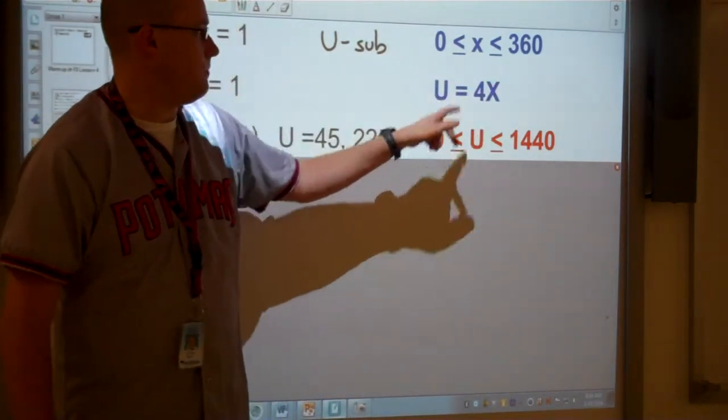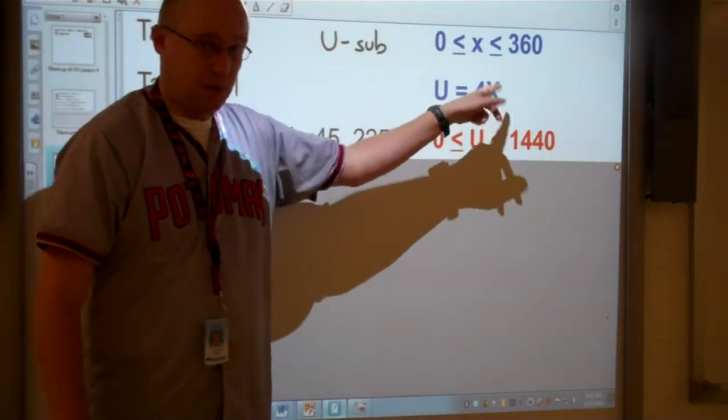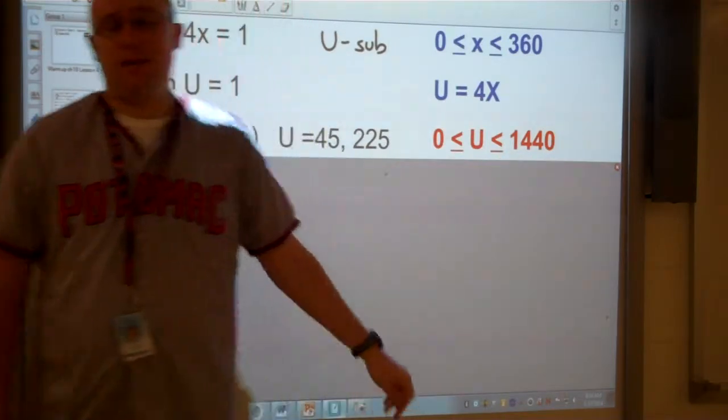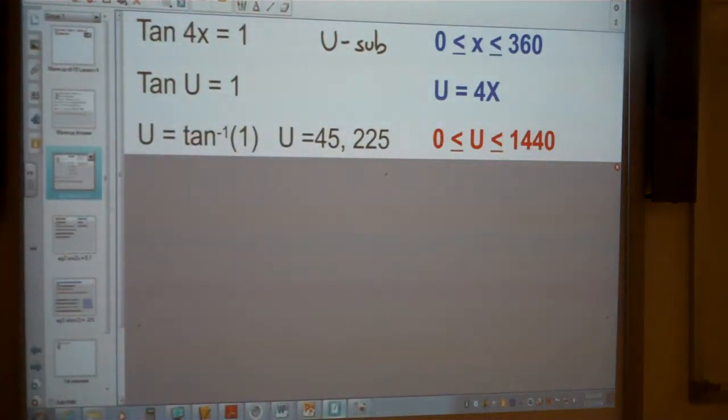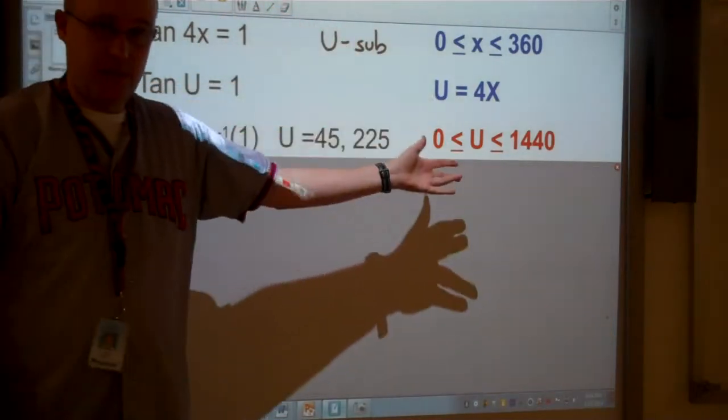So 4 times 0 is 0, and when X is 360, 4 times 360 is 1440. So we change the question, and we also change the limits.